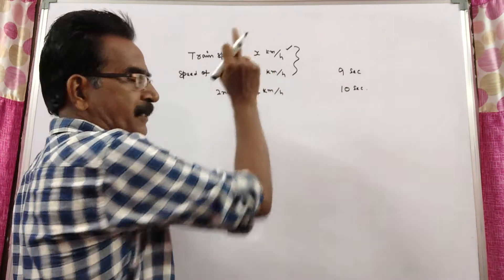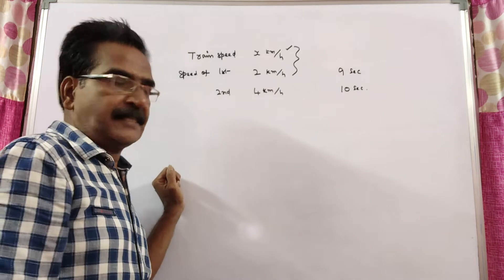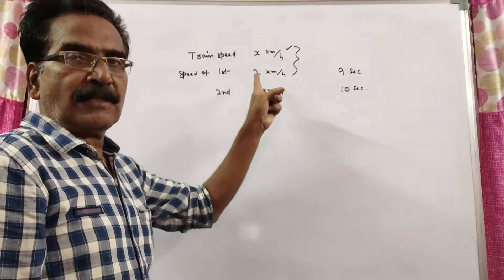See friends, say the speed of the train is x kmph. So, while crossing the first man,